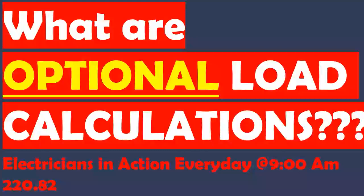In the field, typically people will use the optional method because it gives you a lower calculation — typically a lower amp calculation — which may allow you to size a smaller service, use smaller wire, and use smaller pipe.